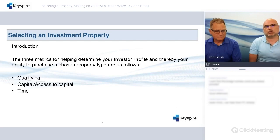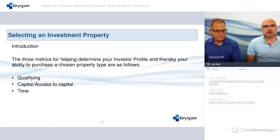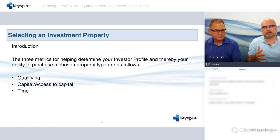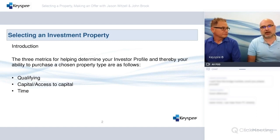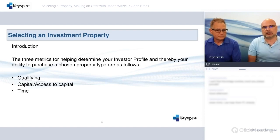These are the three things that you want to be realistic about. You may be able to qualify, you may have the capital to purchase a property, but if you've got five children beneath the age of five, then you don't necessarily have time, and taking on a property where you're going to flip it and do the work is not being realistic.